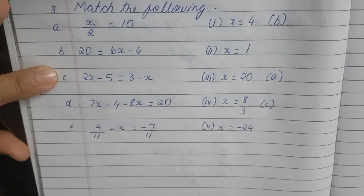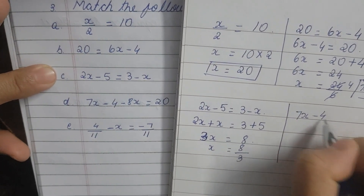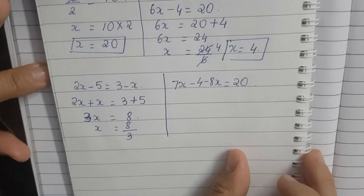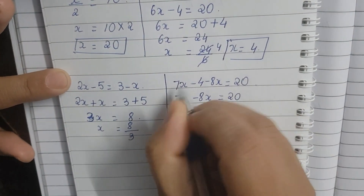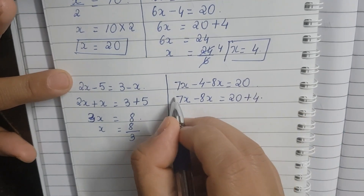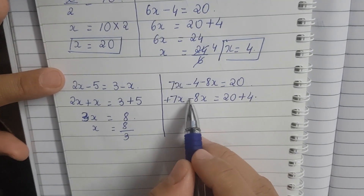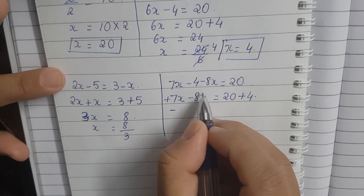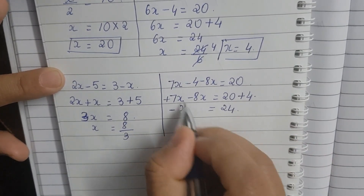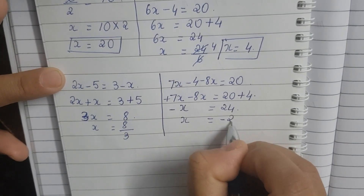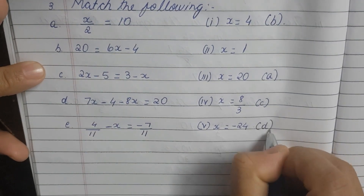Moving on to the fourth sum: 7x minus 4 minus 8x is equal to 20. Simplifying, x equals 20 plus 4 which gives 24, so x is equal to minus 24. The answer is minus 24, and this is option D, subdivision 5.